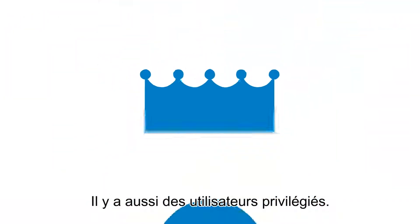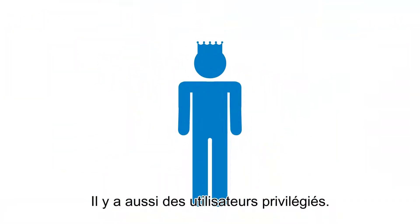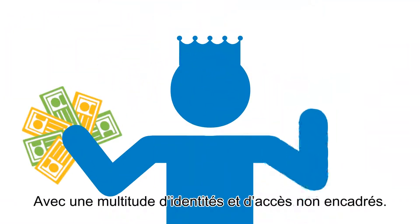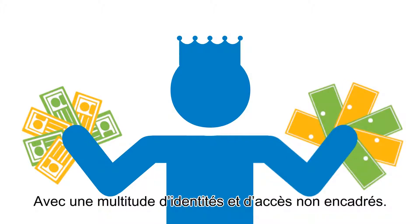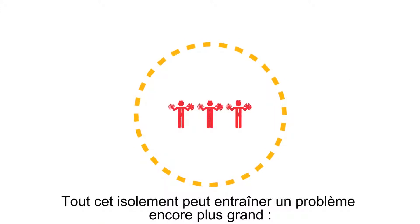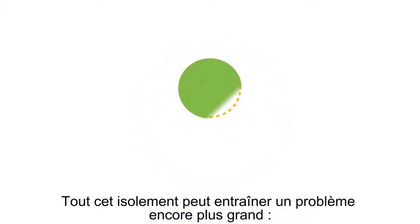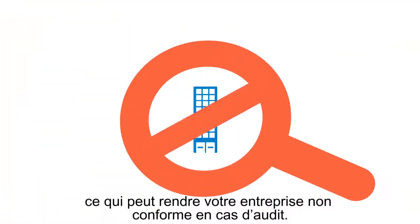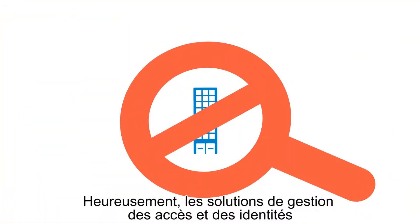Then there are privileged users. With huge collections of ungoverned identities and access privileges, these king users can start to feel like royal pains. And all this isolation can lead to an even bigger problem, because it makes access recertification impossible, which leaves your company vulnerable to audit non-compliance.